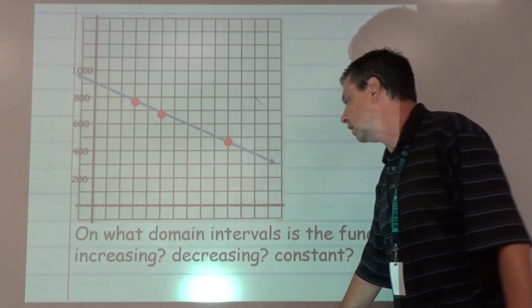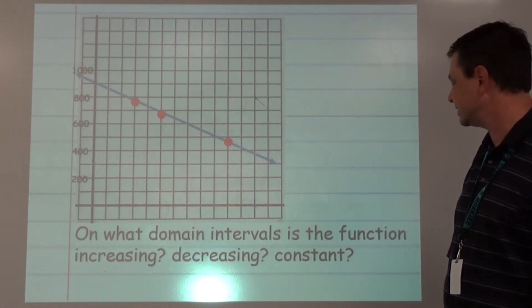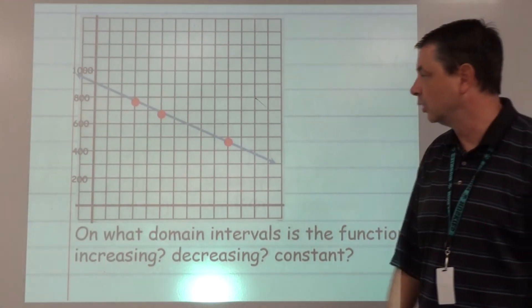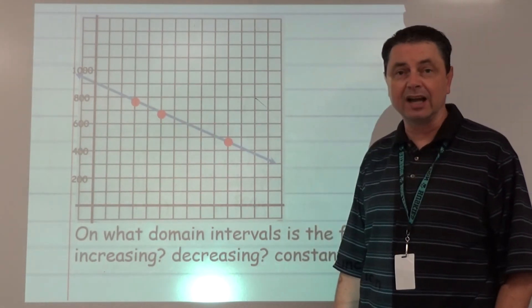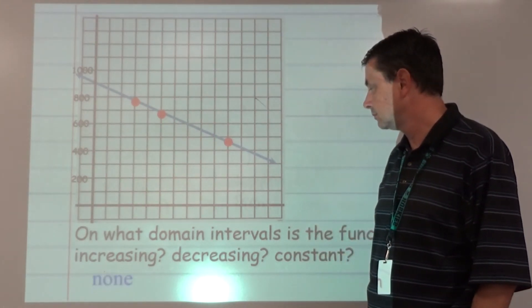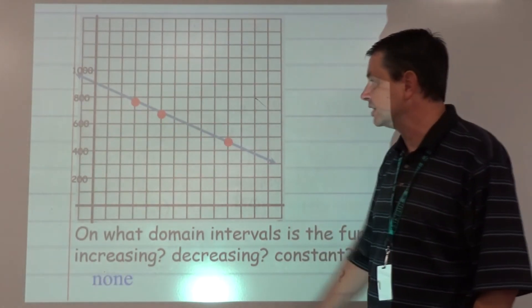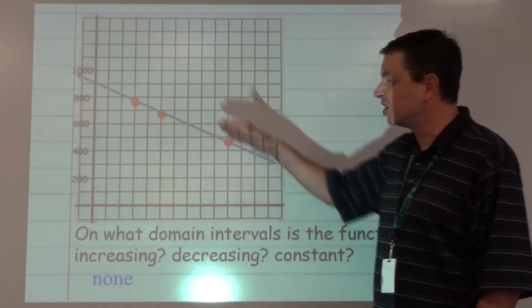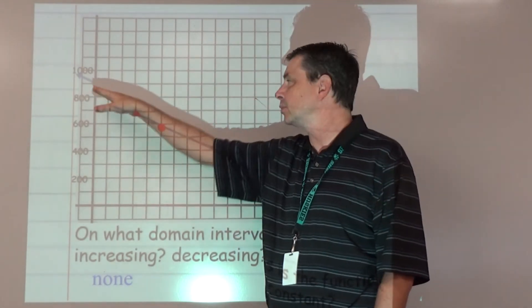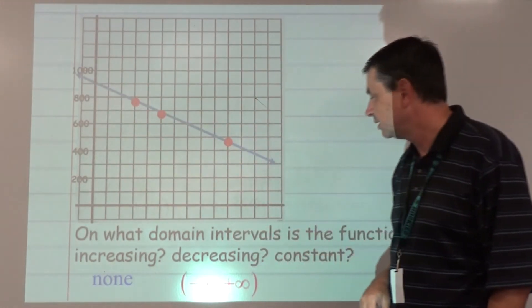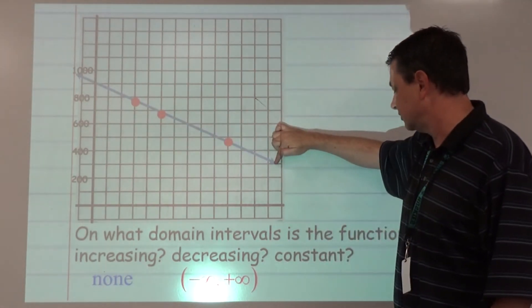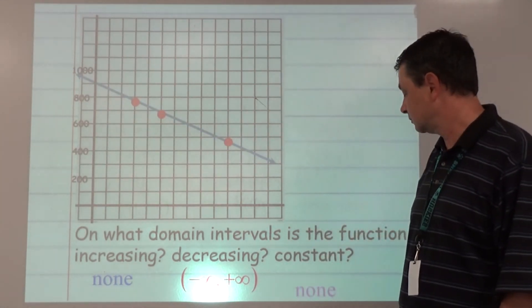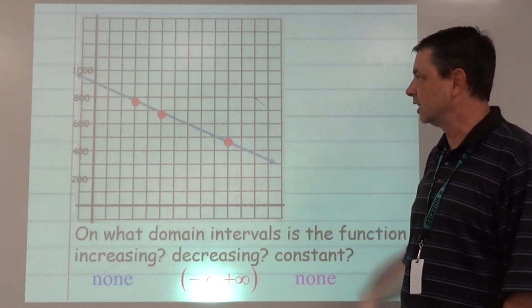On what domain interval is the function increasing, decreasing, or constant? Where is our graph going up? It's not. Where is it decreasing? All throughout here, it's decreasing. We're talking about the function itself, from negative infinity to positive infinity. Where is it flat? It's not, so there's no place where it's horizontal.